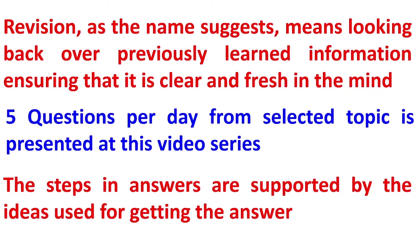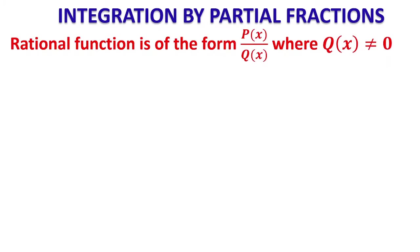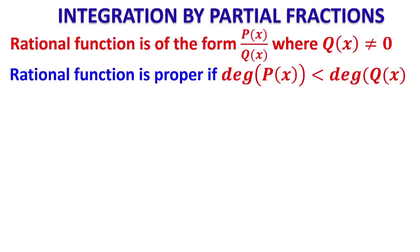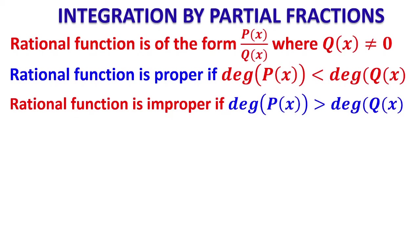Let us see what we mean by partial fractions. A rational function is of the form P(x)/Q(x), where Q(x) is not equal to zero, and both P(x) and Q(x) are polynomials. Depending on the degree of P(x) and Q(x), we define the nature of the rational function. It is proper if the degree of P(x) is less than the degree of Q(x), and improper if the numerator degree is greater than the denominator degree.